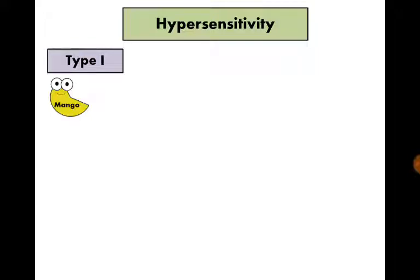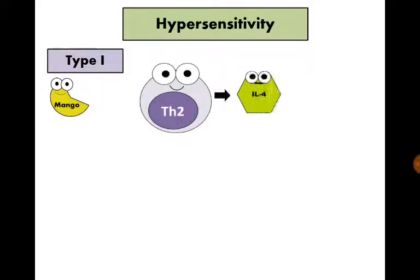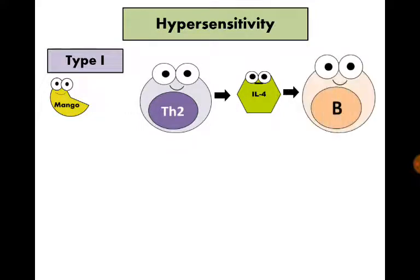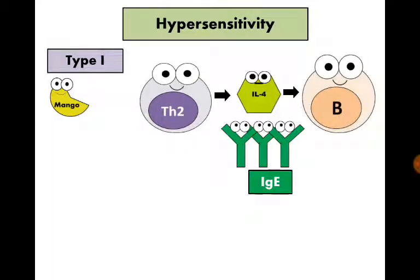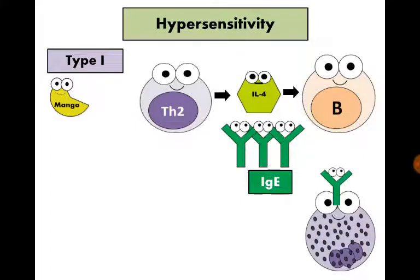T helper 2 cells will be activated, secrete interleukin-4 that stimulates B lymphocytes to secrete immunoglobulin E. Immunoglobulin E becomes attached to basophils. The next time this person eats mango, the immunoglobulin E attached to basophils binds to the mango antigens, causing degranulation of basophils and release of mediators.